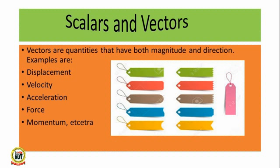Vectors are quantities that have both magnitude and direction. Examples are displacement, velocity, acceleration, force, and momentum. Any time we talk about these quantities, we make references to the direction with which they are going.